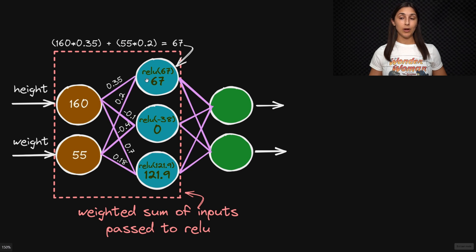So here ReLU is accepting 67, the weighted sum as input, and then it calculates the maximum between 67 and zero. And of course, that is 67.